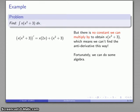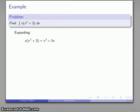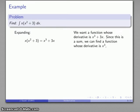So what can we do? Well, we can always do algebra. So let's take a look at that function again. That's x times x squared plus 3. That's the same as x cubed plus 3x. I've gone from something that's a product to something that is a sum, and that's good because finding the anti-derivative of a sum is a lot easier.